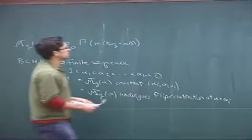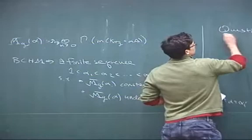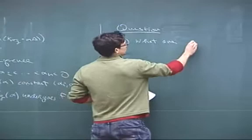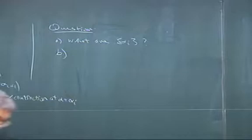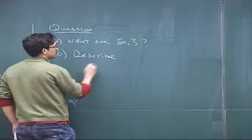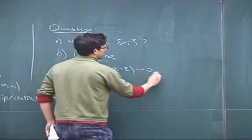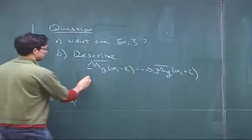An interesting question then is: can we actually find all these rational numbers? What are the rational numbers α_i? And the second question is, can we describe these birational transformations explicitly? We have some kind of birational transformation happening at these threshold values, and we'd like to describe them explicitly in terms of α_0 and α_1.